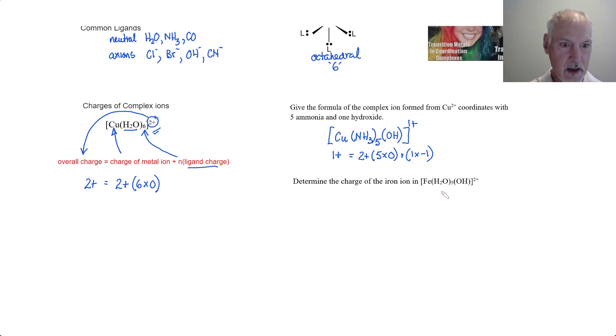This question is a little bit different from the one above. You're given the formula and we have to work backwards and get the charge on our iron ion. So the overall charge is two plus. We need to figure out what the charge is on our iron. We then have five waters at zero each, and again, one hydroxide at one minus. Solving for the unknown iron, we'll bring that minus one over to the other side and it will then be three plus.